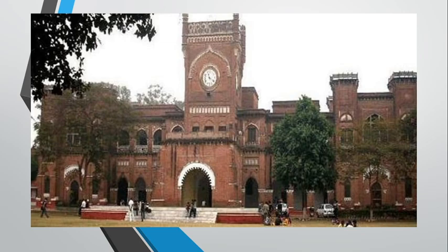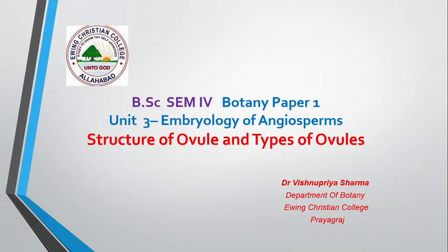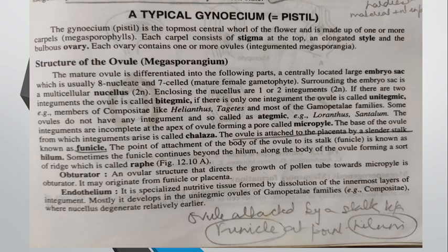In this video lecture we will be discussing about the structure of ovule and types of ovule. First we will discuss the structure of ovule and then the types. If we talk about the gynoecium or the female reproductive part of a plant, it is divided into stigma, style, and ovary. The ovary is the basal bulbous part and it contains many ovules.